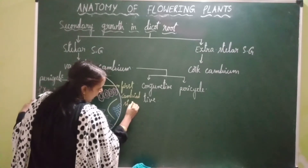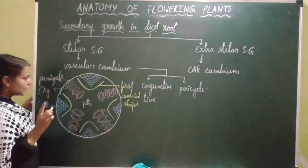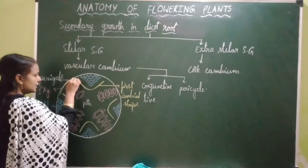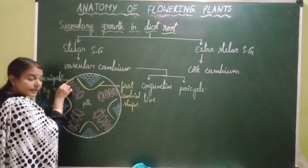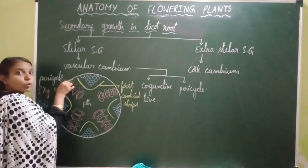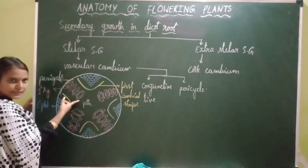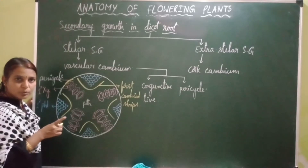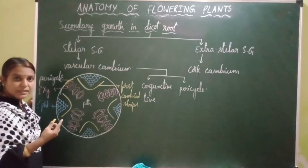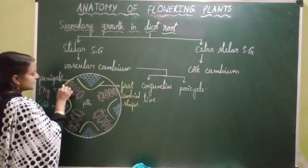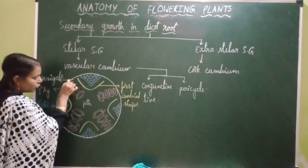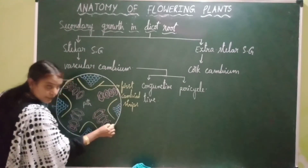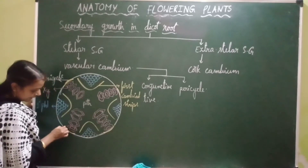After formation of first cambial strips, second cambial strips are formed by the de-differentiation of pericycle — specifically, the part of the pericycle which is present above the protoxylem of the primary xylem. Primary xylem consists of protoxylem and metaxylem; the first-formed xylem is protoxylem and the later-formed xylem is metaxylem.